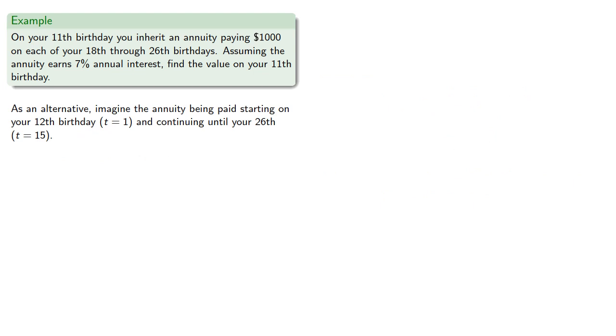As an alternative, imagine the annuity being paid starting on your 12th birthday and continuing until your 26th birthday, but someone steals the payments made from your 12th birthday t equals 1 until your 17th t equals 6.